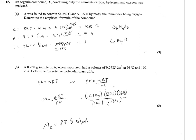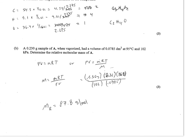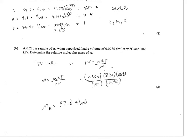And B, a 0.230 gram sample of A when vaporized had a volume of 0.0785, 95 degrees, 102 kilopascals. What's the relative molecular mass? You can use the ideal gas law for this, and I used PV equals little mRT over big M, and went ahead and plugged in the 0.230 grams. I could have used PV equals nRT, and once I had the moles, I could have taken my grams divided by my moles, and I would have come up with the same relative mass of 87.8 grams per mole.